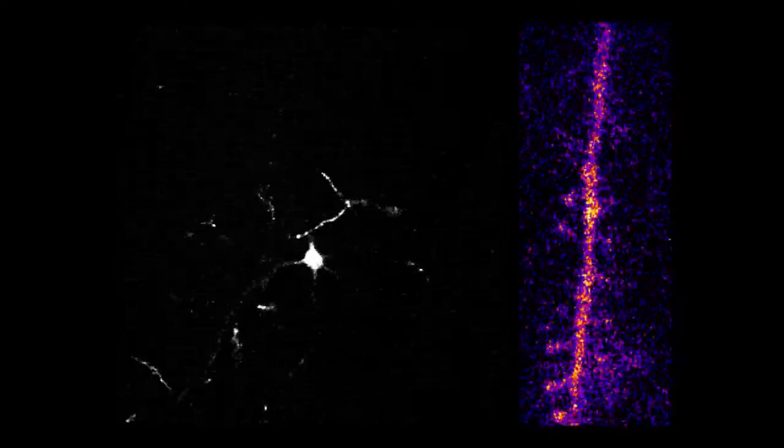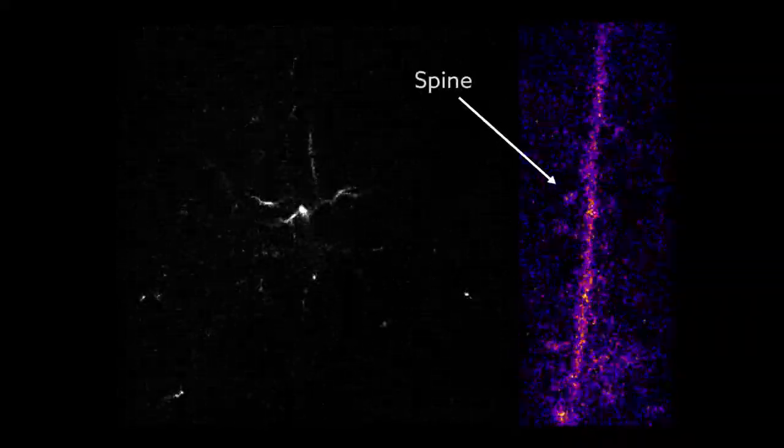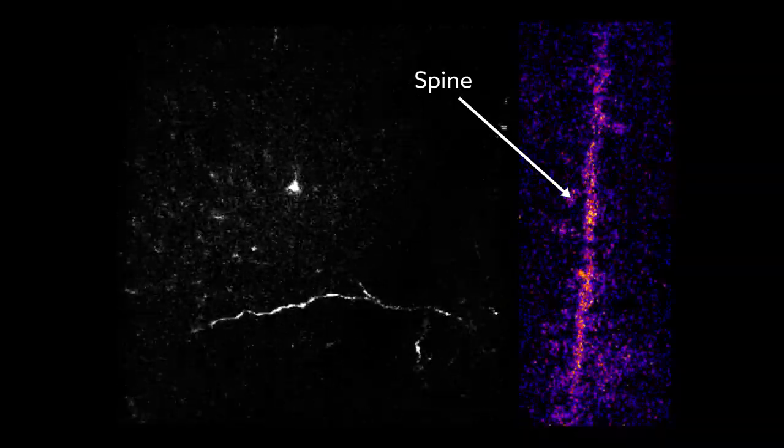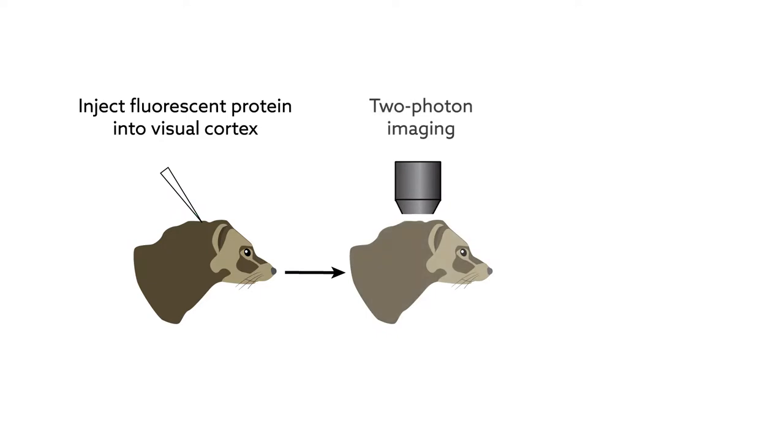To evaluate the degree of synaptic clustering in the circuits responsible for vision, the team mapped the spatial receptive fields of about 100 spines – the structures that receive synaptic inputs – on the dendrites of individual neurons in the visual cortex of ferrets. They used two-photon imaging to record activity while the animals looked at a variety of white and black bars.